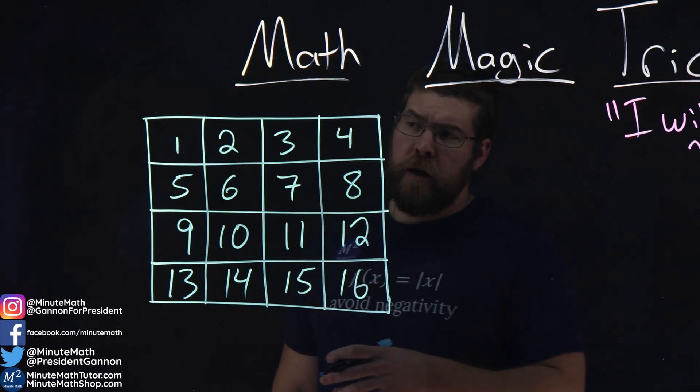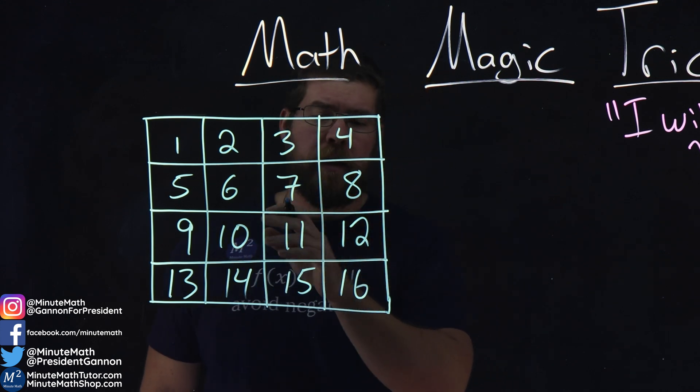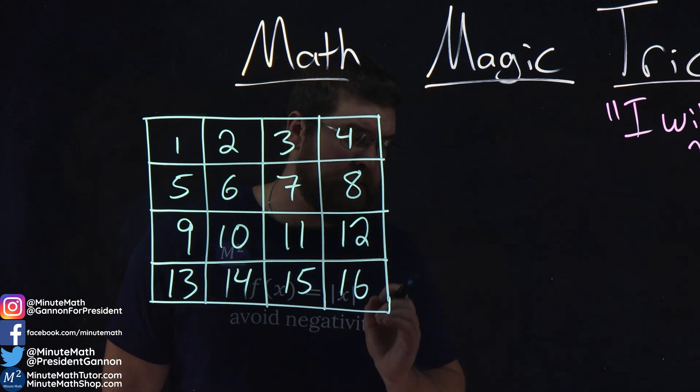I'm going to predict your number. We're given this grid right here: 1, 2, 3, 4, 5, 6, 7, 8, 9, 10, 11, 12, 13, 14, 15, 16.